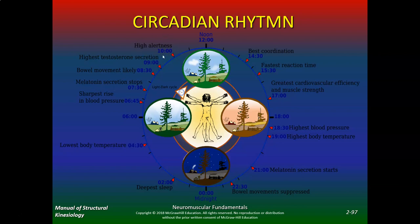Your highest alertness is at 10. Taking this class at 10 o'clock is great because you're on high alert. In the future, try to take your toughest classes around 9, 10, or 11. Taking chemistry, physiology, or anatomy around 10 is great. Don't take them in the afternoon because that's not when your alertness is highest.